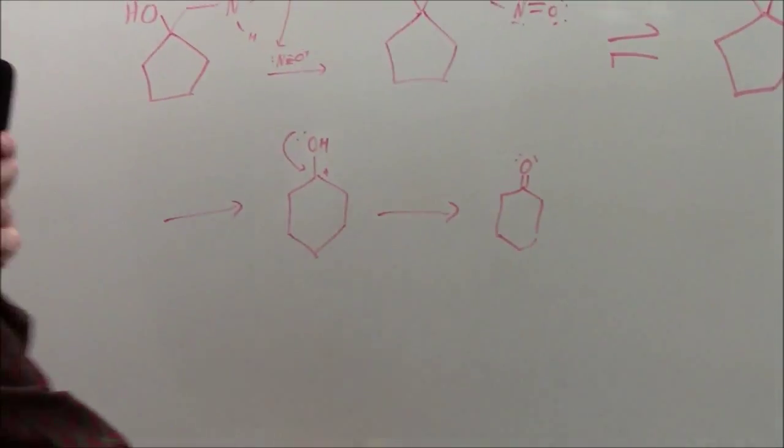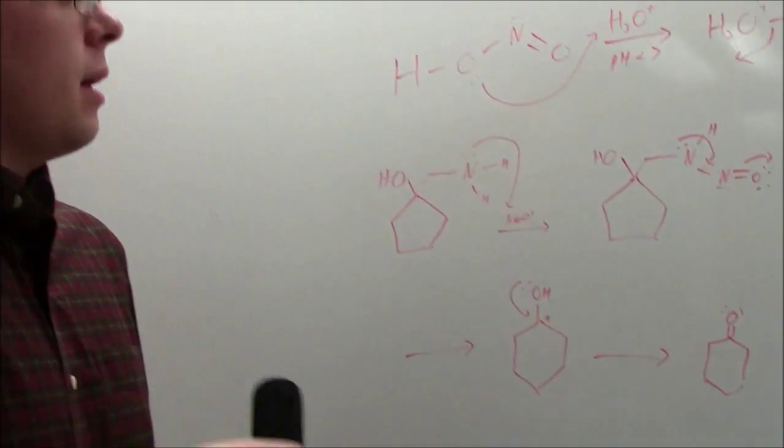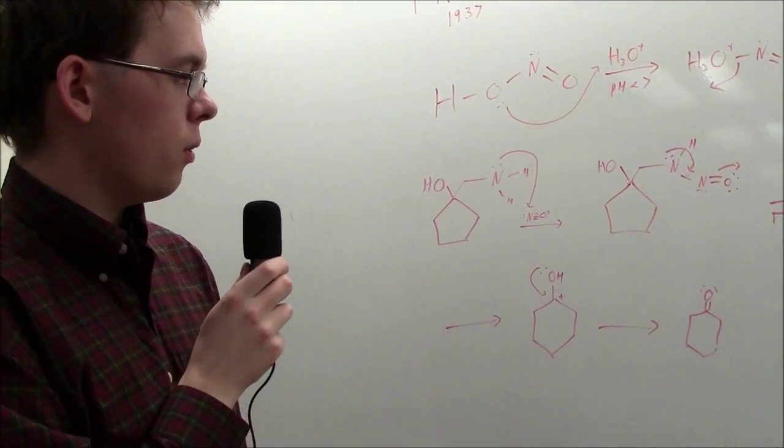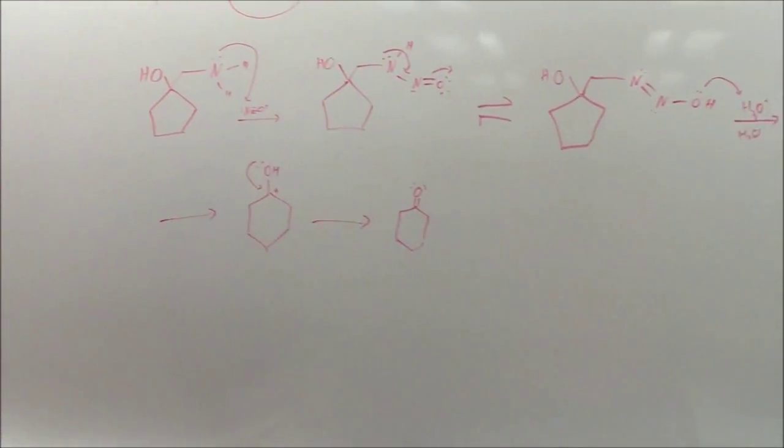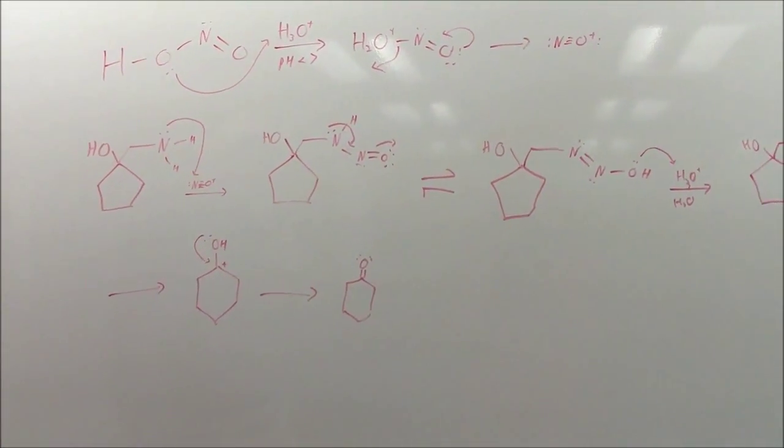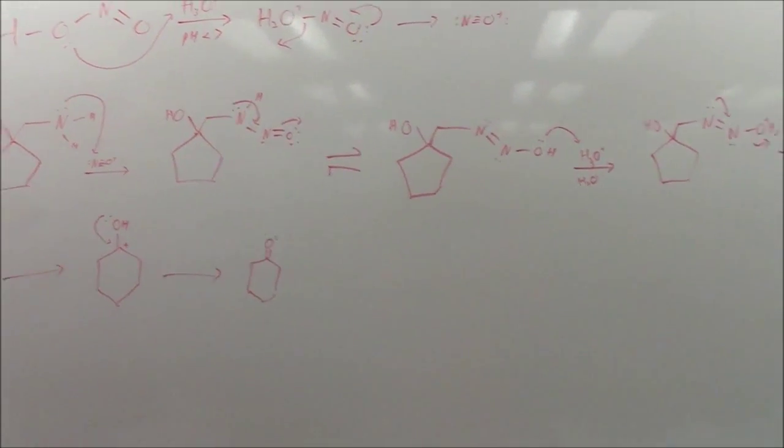Those are the basic elements of the mechanism for Demionov's five or six-membered ring expansion, although Tiffinow later improved it by showing it to be done with much larger rings, nine, 12-membered, using catalysts.